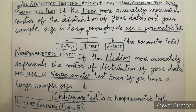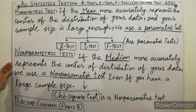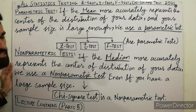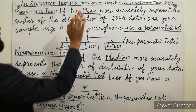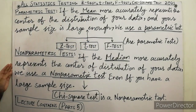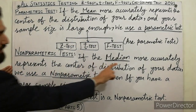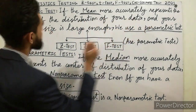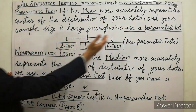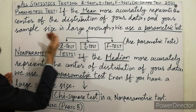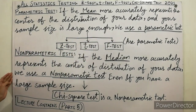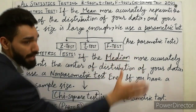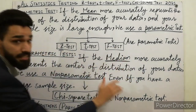In part 1, I will discuss parametric versus non-parametric tests. The easiest definition: for mean, we always use parametric test, and for median, we always use non-parametric test. Mean more accurately represents the distribution of your data when your sample size is large enough to use parametric test. Must remember that Z test, T test, and F test are the parametric tests.